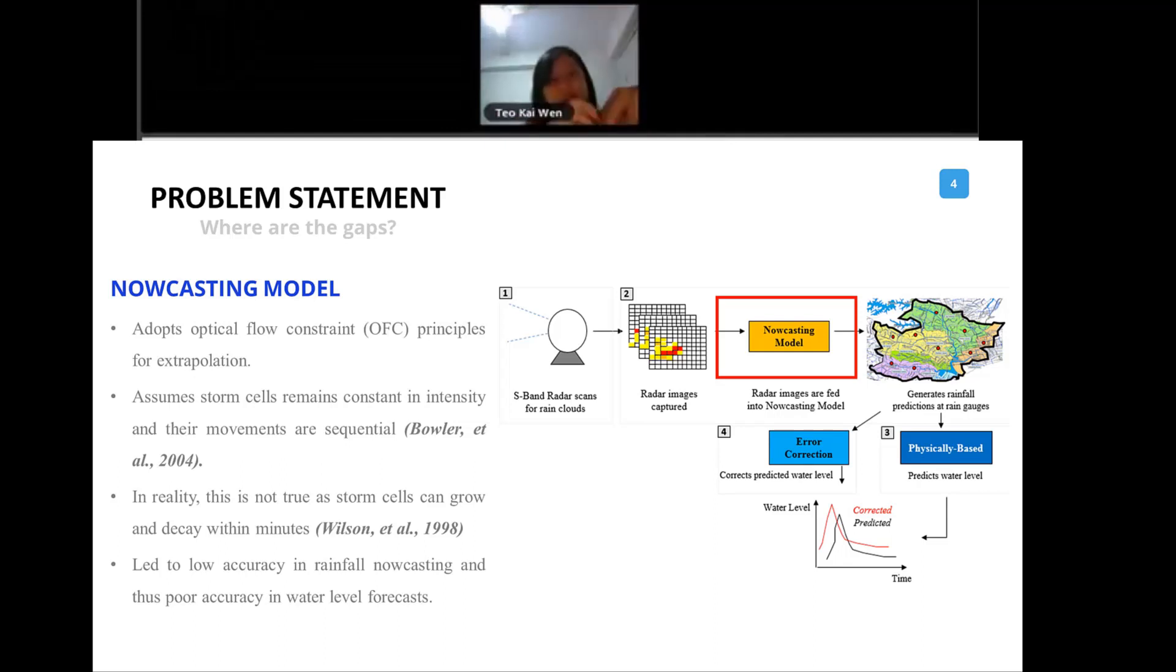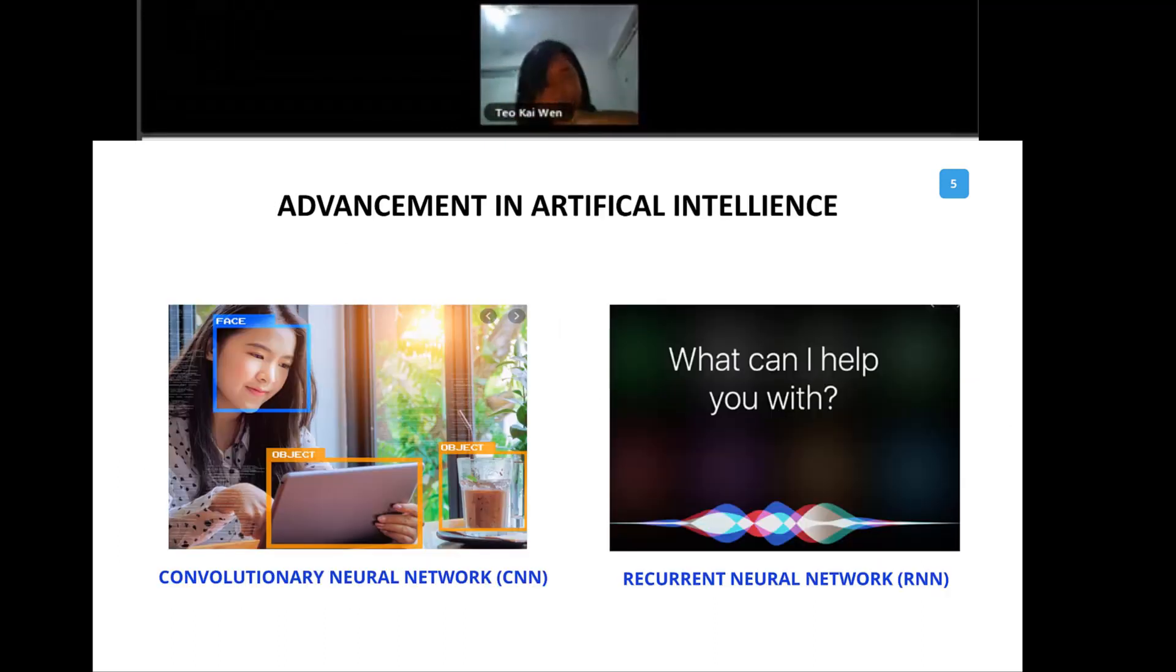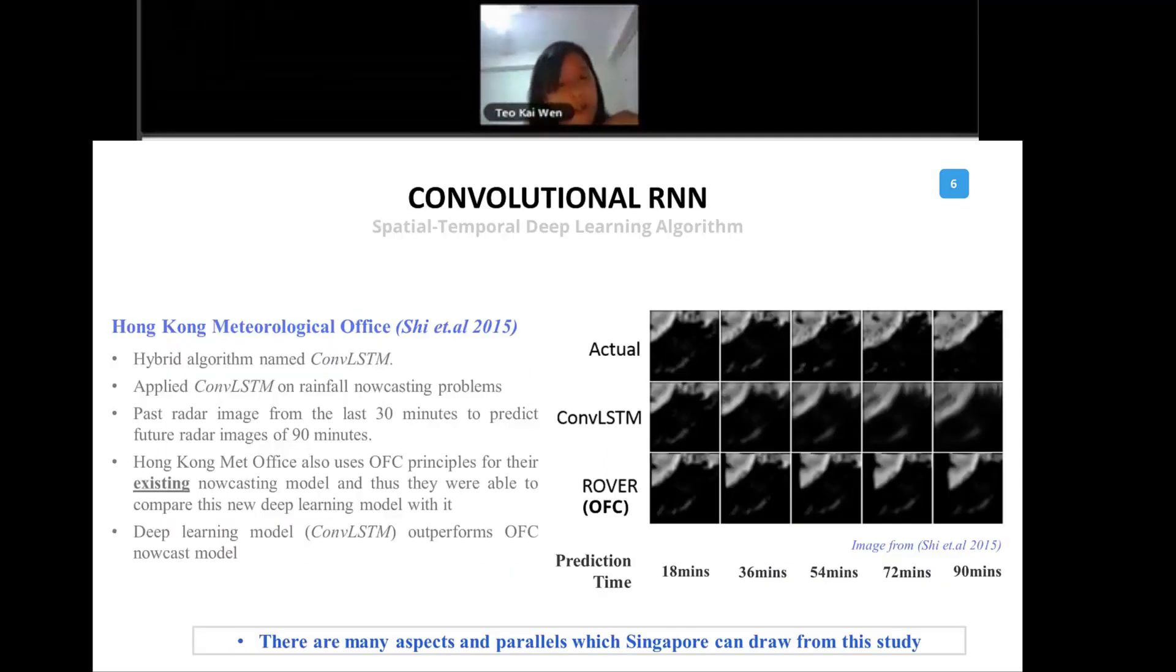Over the years there has been advancement in artificial intelligence, mainly in two areas. The first area is in image recognition. You can sense it as well that image recognition tools are getting more and more prominent and powerful. This image recognition technique uses this algorithm called the convolutional neural network. What this algorithm does is it's actually very good in capturing and picking up important features.